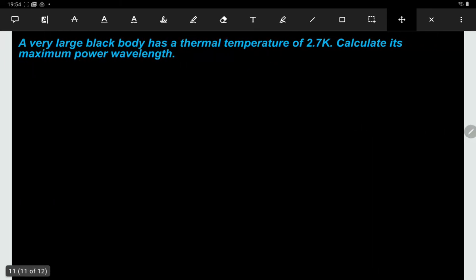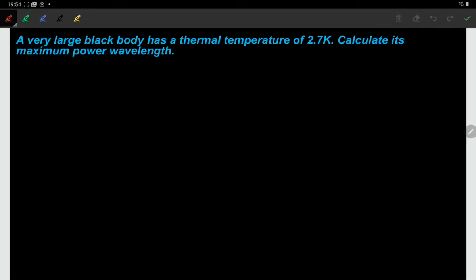Let's do another example. This time it's not a star. We're just told rather mysteriously that it's a very large black body and it has a thermal temperature of 2.7 Kelvin. What would be the wavelength of its maximum power emission? So we're going to use the same formula again. This time we are calculating the wavelength, so lambda equals 0.0029 divided by the temperature. In this case we're told it's just 2.7 Kelvin, so whatever it is, it's very cold. We put that into a calculator and we're going to see a wavelength of 0.0011 meters.